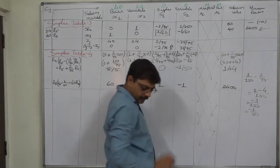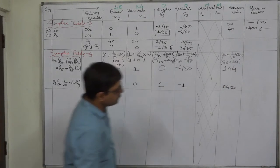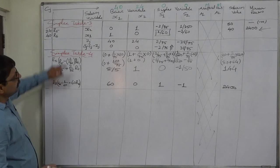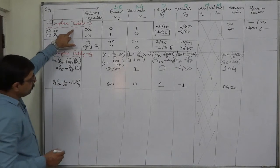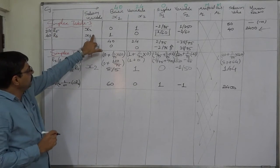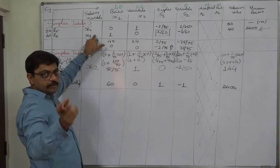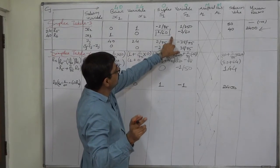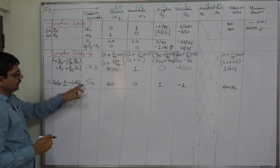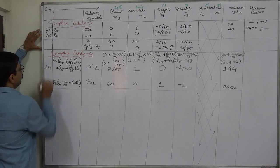To check the optimality of this solution we should have delta J values; to have delta J values we need Z J values; and to have Z J values we have to substitute the relevant variables. There will be no change in the first row because it was not the key row, so we keep X2 as it is. But we will drop X1 since it was the key row variable.